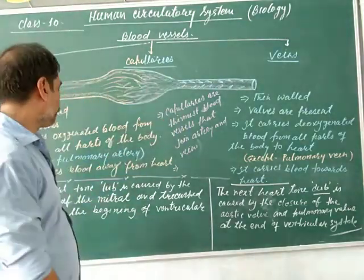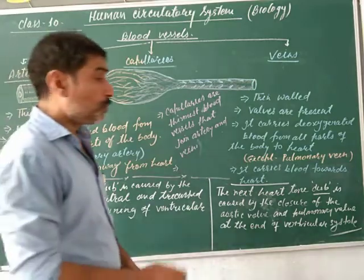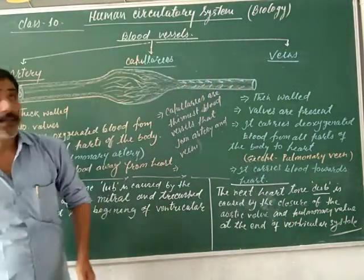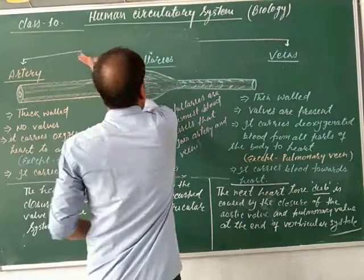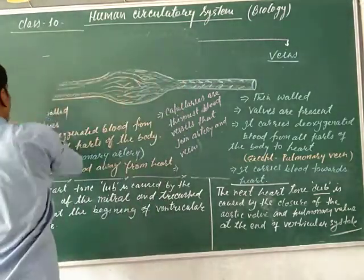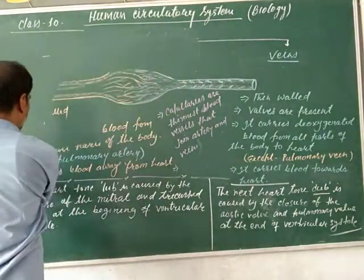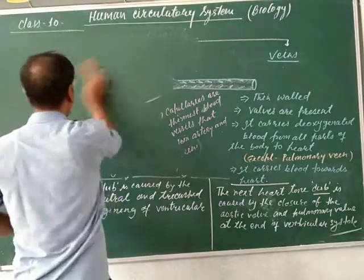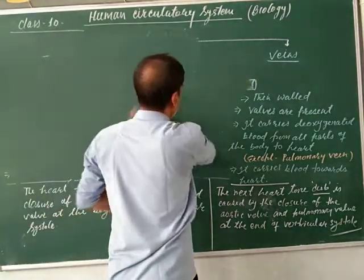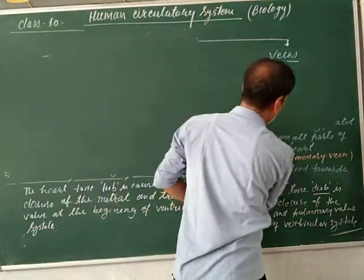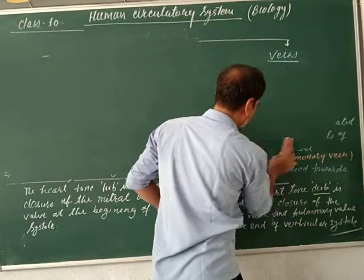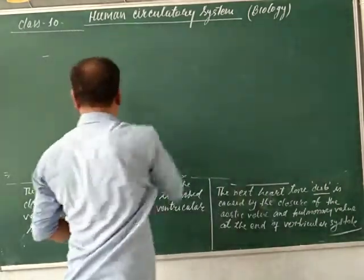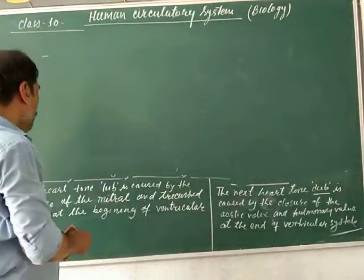Now, there are two sounds produced in the heart. These are the lub and dub. There are two sounds produced by the heart, and these are called heart tones — lub and dub.